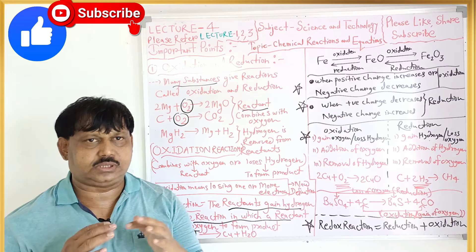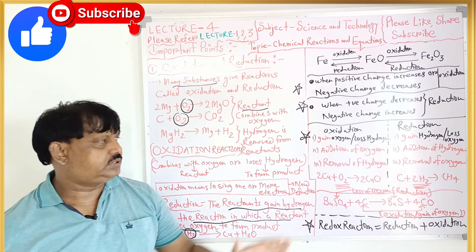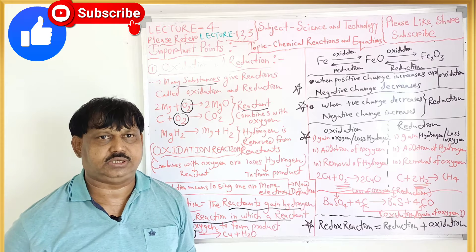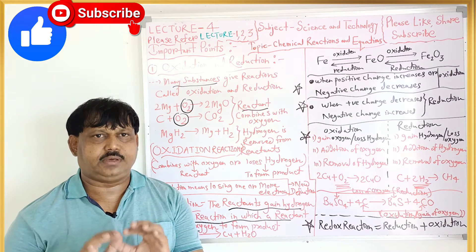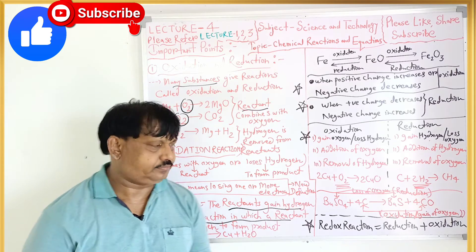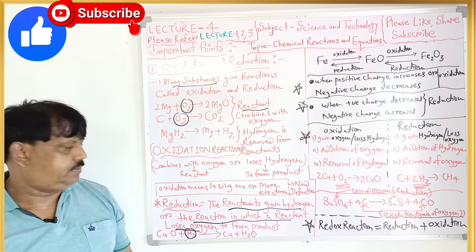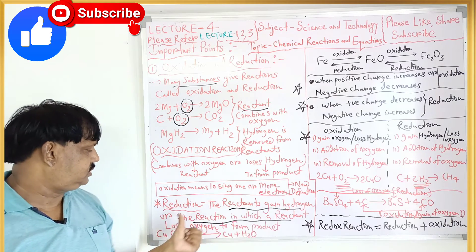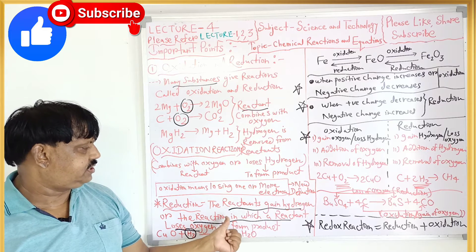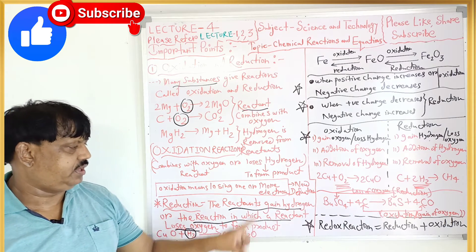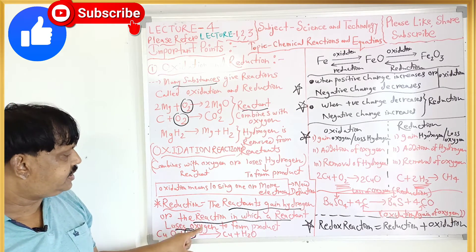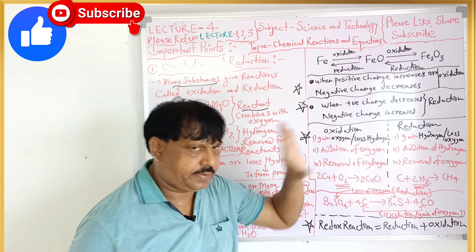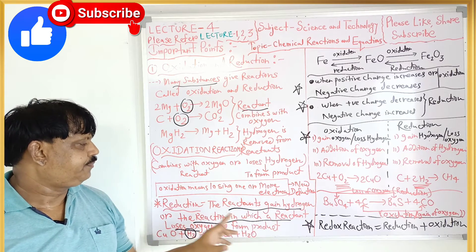But for standard 10, yeh confusing topic hai. Aapko concentrate in do points ke upar karna hai. Reduction ka matlab: the reactant gains hydrogen, or the reaction in which the reactant loses oxygen. Gain of hydrogen or loss of oxygen — such a reaction is called a reduction reaction.